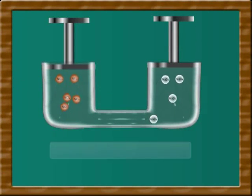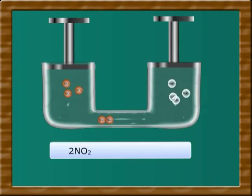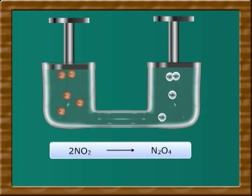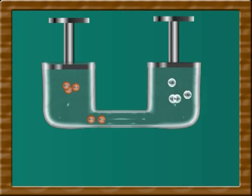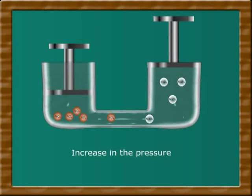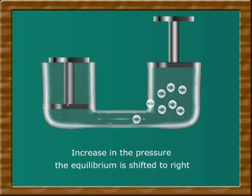In the reaction between nitrogen dioxide to form nitrogen tetraoxide, there is a decrease in the number of molecules of reactants to product. So, in this reaction, the rate of forward reaction is increased with the increase in the pressure. That is, equilibrium is shifted to the right.